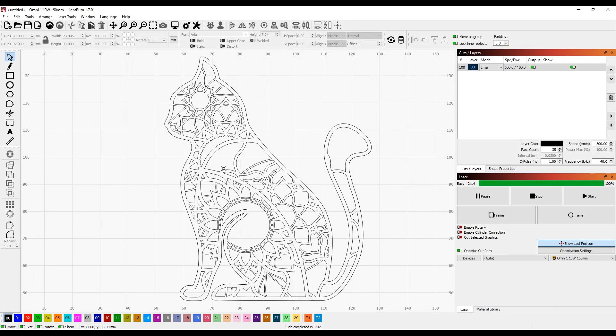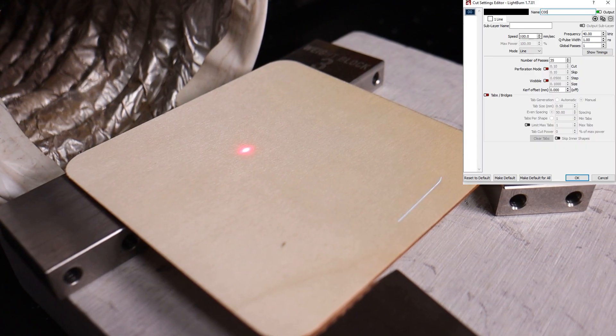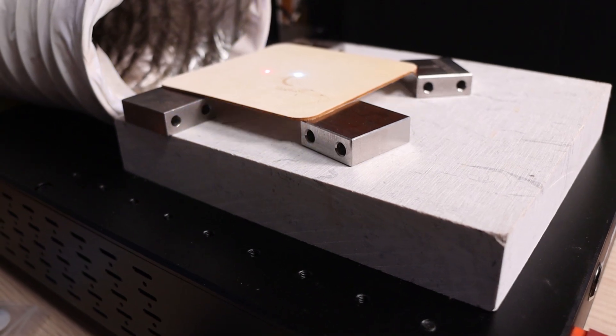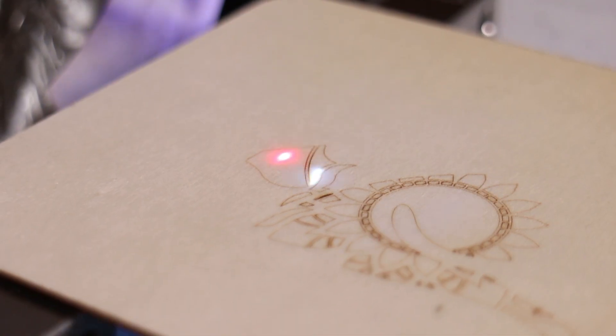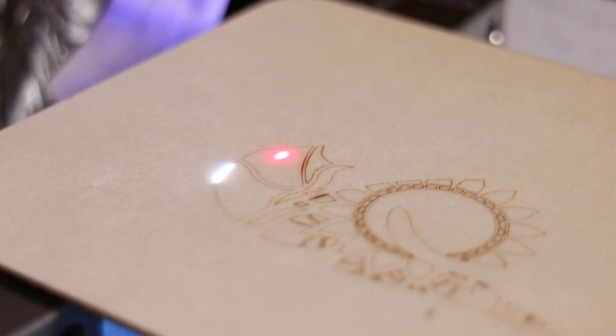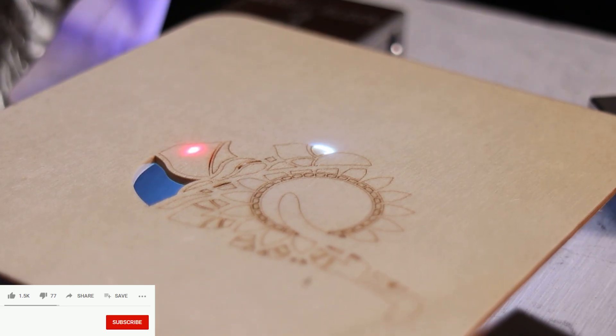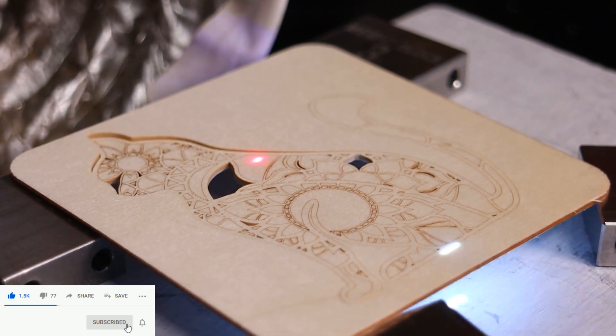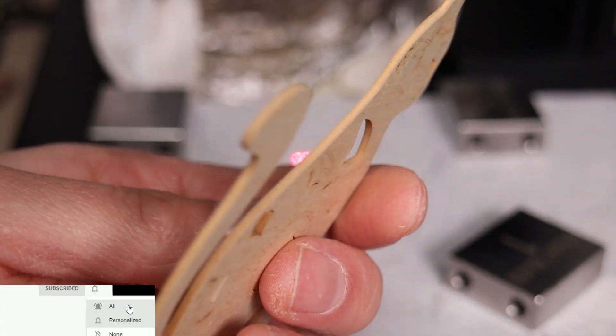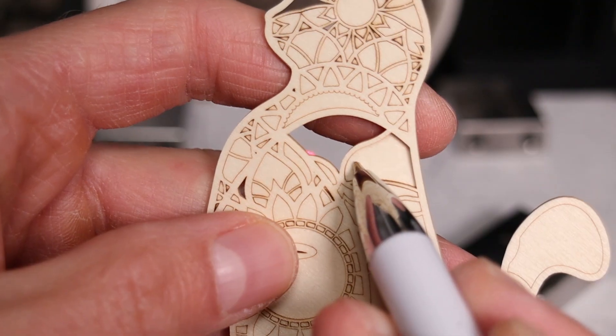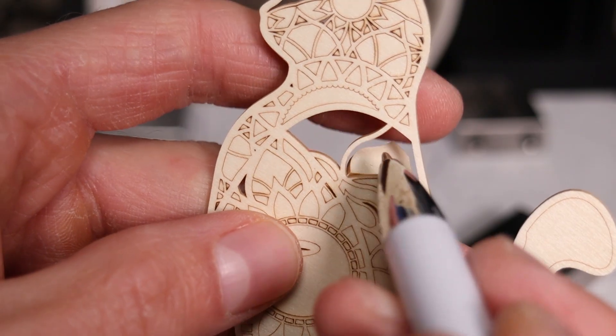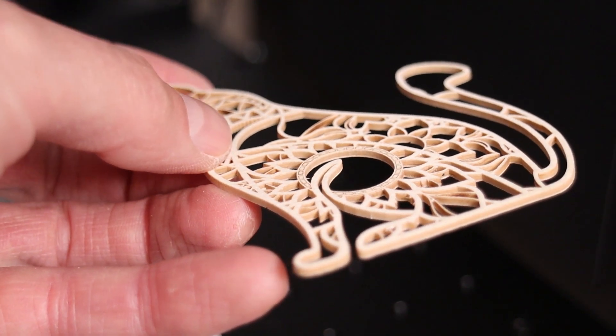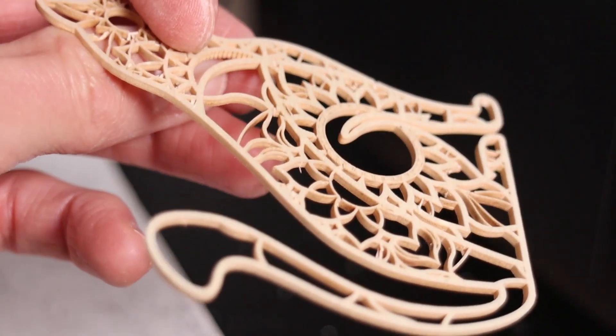For the ultimate test, I cut an intricate art piece from 2 mm thick plywood. It was mesmerizing to watch the machine performing fast and clean cuts in near silence. Once completed, the parts simply popped out, leaving behind a beautifully detailed piece of art. I'm still amazed at the level of clarity and precision this UV laser can achieve.